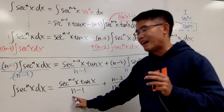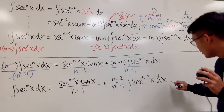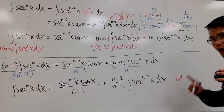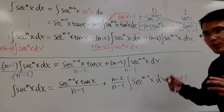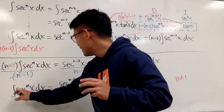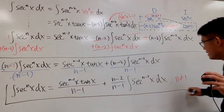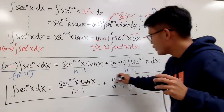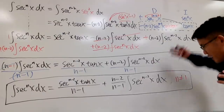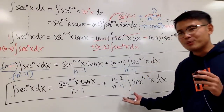Note that we have (n minus 1) in the denominator, so n cannot equal 1. If n equals 1, you'll need to watch a separate video for that integral. And with that, we are done — let me box the whole formula. Leave a comment below and let me know how much you love this formula!